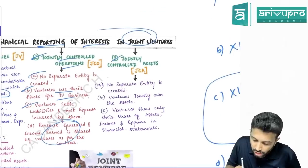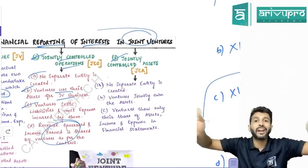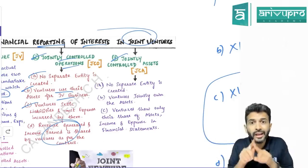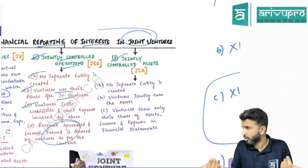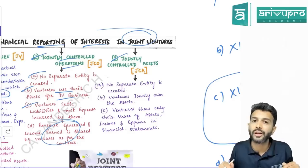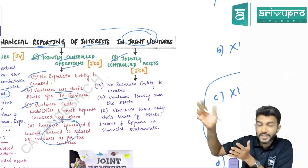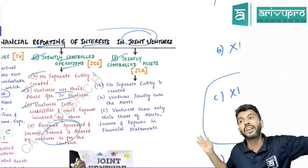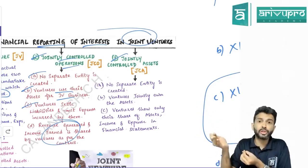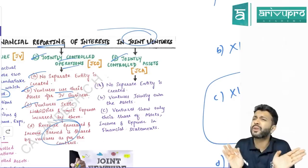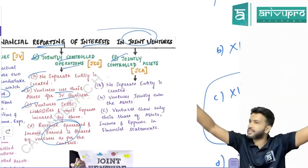Jointly controlled assets (JCA): two or more parties come together to form or build an asset — for example, a huge underground storage facility to store natural gas or petroleum products. Since building such a massive facility requires significant resources, parties prefer to share it. This arrangement is called jointly controlled assets. Again, no separate entity is formed.